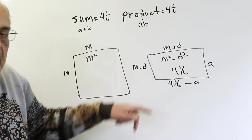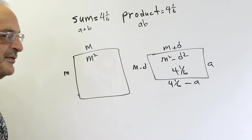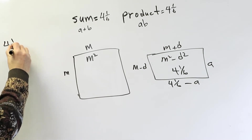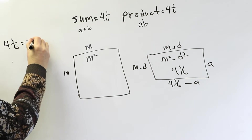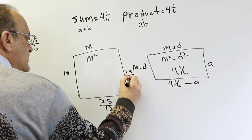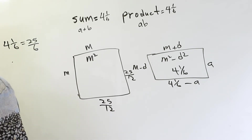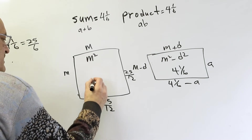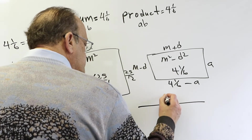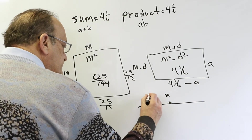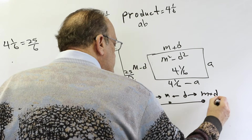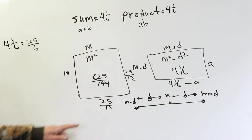When you add this side to this side, a and negative a cancel and you get the sum of 4 and 1/6. So these two sides also add up to 4 and 1/6, meaning each side is half of 4 and 1/6. Since 4 and 1/6 equals 25/6, half of that is 25/12. So m equals 25/12, which makes the area of the square 625 over 144.